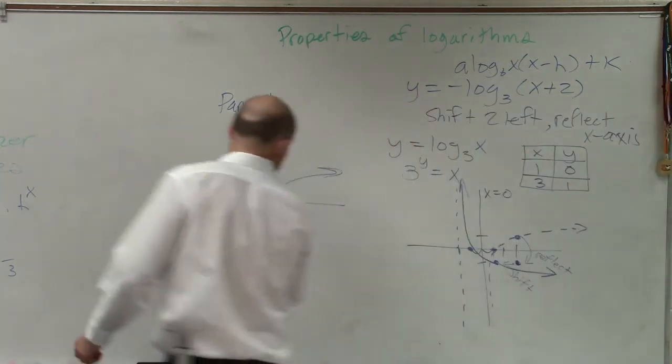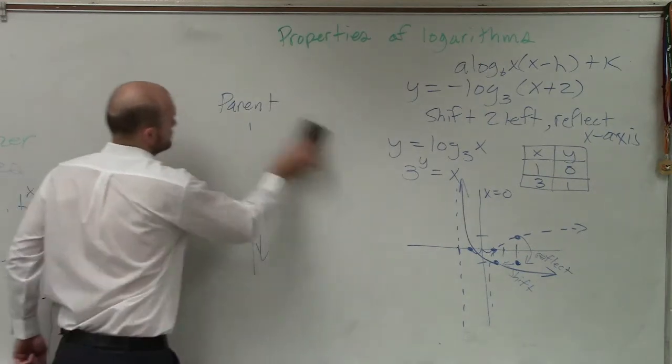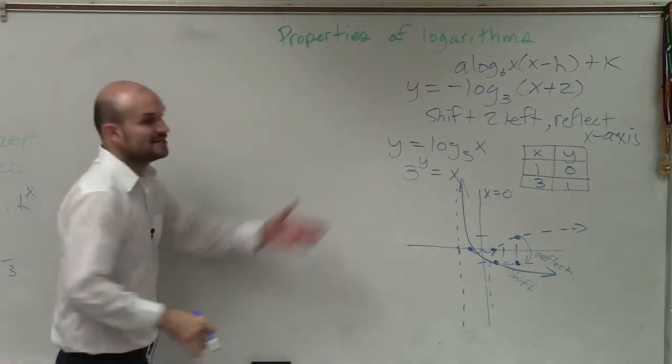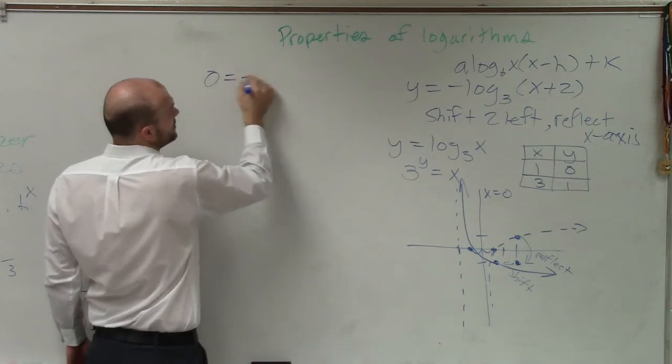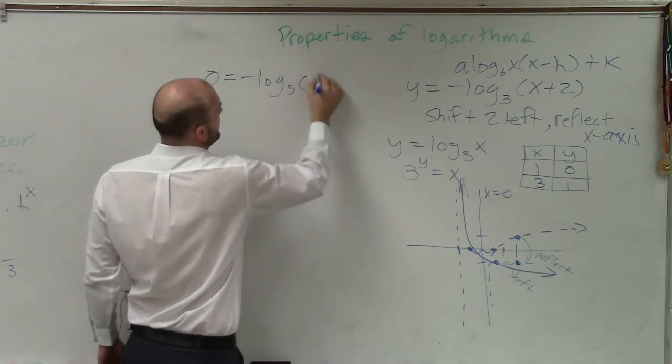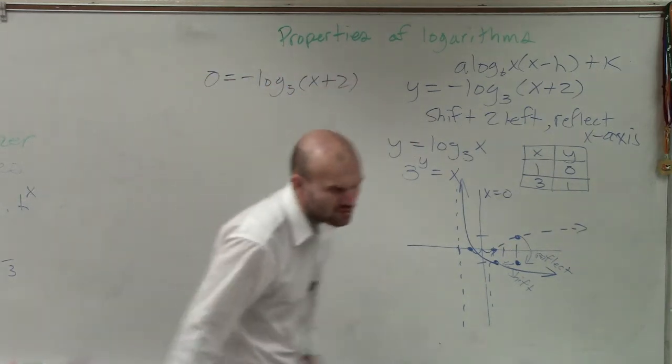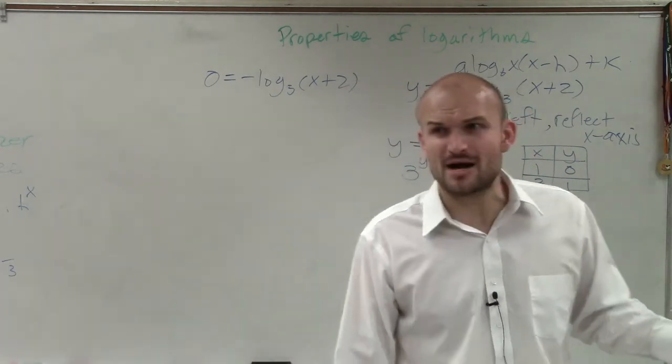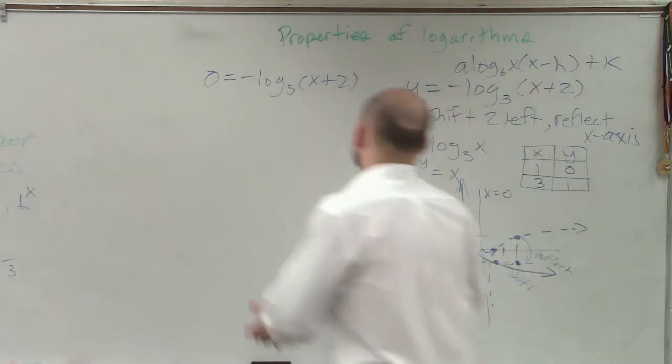Now, let's find the x-intercept. Again, x-intercept, f of x has to equal 0 or y equals 0. 0 equals negative log base 3 of x plus 2. How we solve this? It was easy last problem, right?